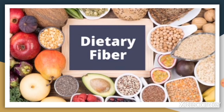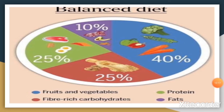Water is also a very important part of our body — we should drink plenty of water every day. A balanced diet is also very important. A diet that has all the nutrients in the right amount — carbohydrate, protein, fats, vitamins, and minerals — along with dietary fiber and water, is called a balanced diet. In order to stay healthy, we should eat food items from each of these food groups.